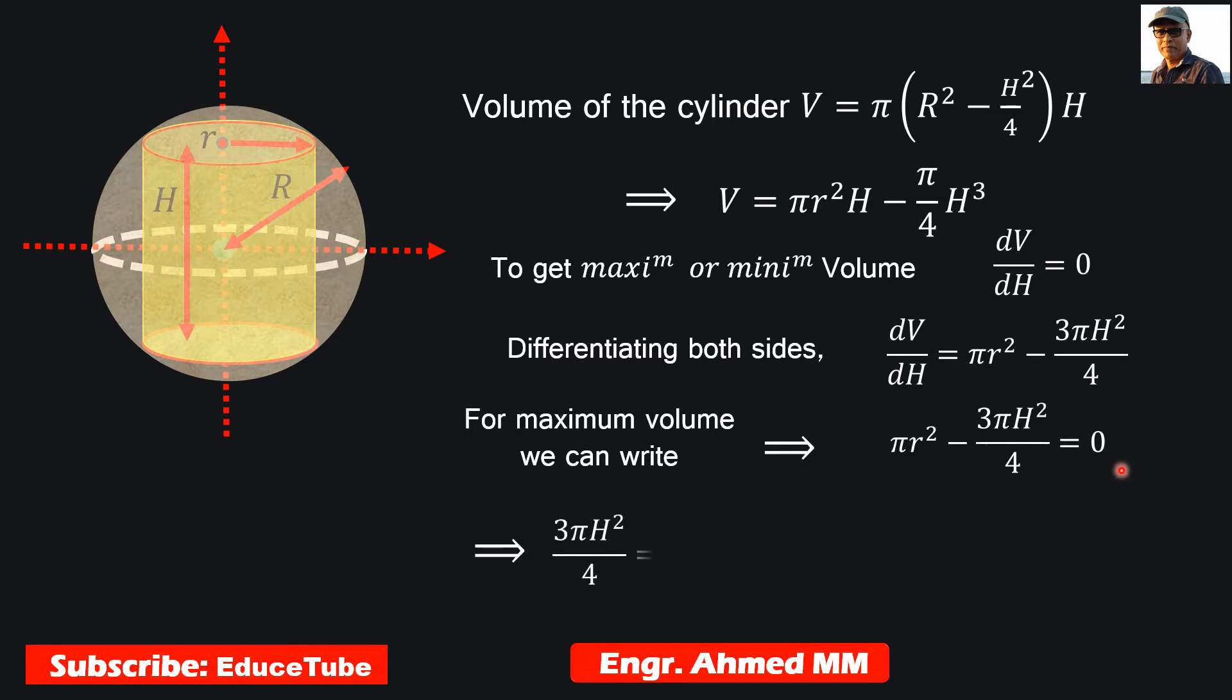Let's find the relation between H and r. We got the height of the cylinder equal to H = 2r/√3. This relation we will use when we find the second derivative.